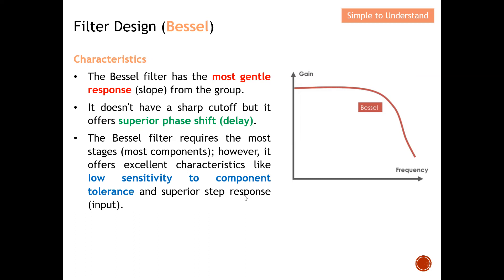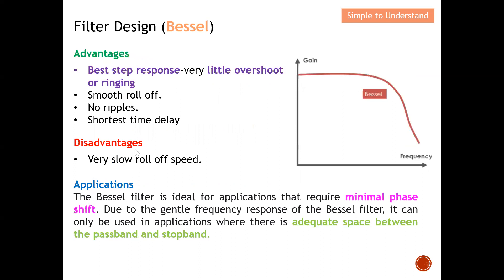Bessel also has a superior step response, especially when the input is a square wave. As mentioned, they have the best step response — very little overshoot or ringing. You can see it's almost a flat line with no overshooting and no ringing effect on both the pass band and also the stop band. They have a small roll-off, meaning they don't have a very steep skirt — the most gentle roll-off compared to the rest. There's no ripple on the pass band and also on the stop band. They have the shortest time delay of all four.